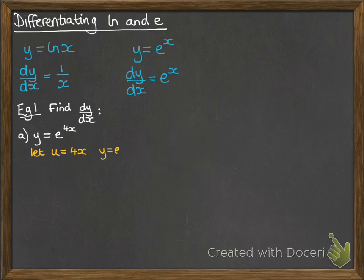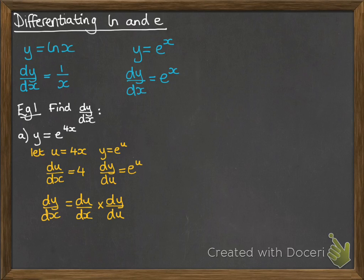So, u equals 4x. Therefore, y equals e to the u. Du/dx will be 4. Dy/du is e to the u. So, dy/dx, using the chain rule, will be those two multiplied together, which is 4e to the 4x.